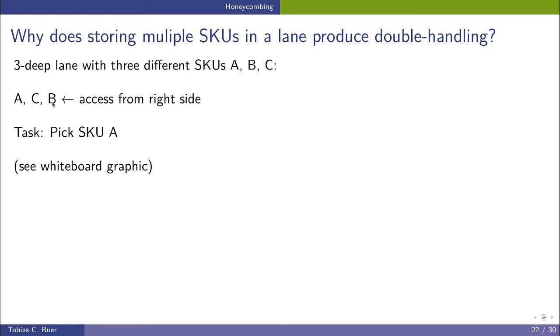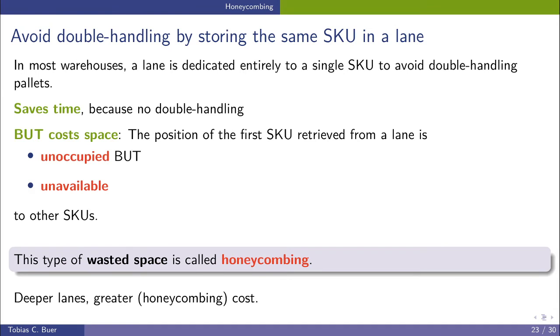This is a typical way of operating such a warehouse. So we avoid double handling by storing the same SKU in a lane, and therefore we can save a lot of time because we avoid this double handling.